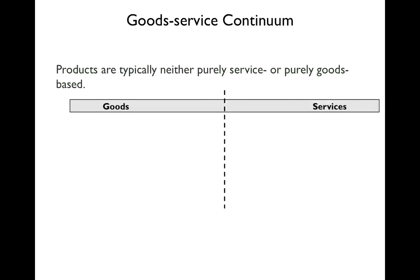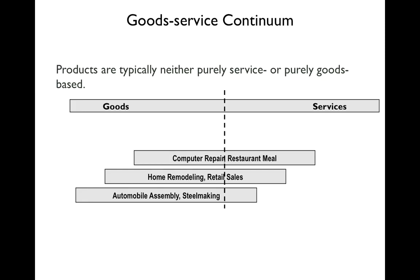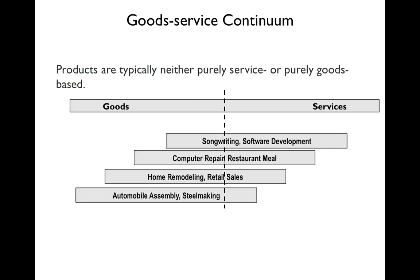Here's the goods and services continuum. A lot of products are not purely a service or a good — they're a combination. Automobile assembly and steelmaking are mostly goods with a small amount of service. Home remodeling and retail sales have a bit more service. Computer repair and a restaurant meal are roughly half goods, half service — you're eating food, but a server is transforming it for you at a specific time. Songwriting and software development lean more toward services, and surgery and teaching are mostly services with just a small amount of goods.